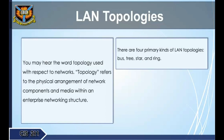You may hear the word topology used with respect to networks. Topology refers to the physical arrangement of network components and media within an enterprise networking structure. There are four primary kinds of LAN topologies: bus, tree, star, and ring.